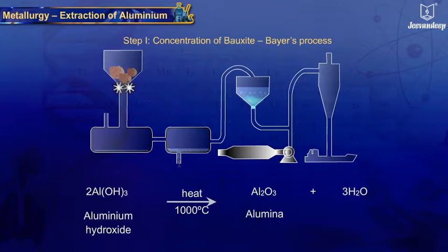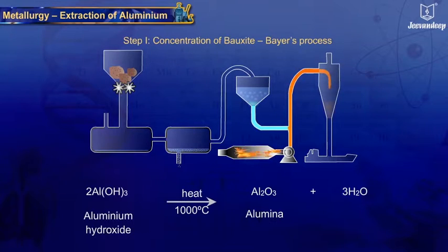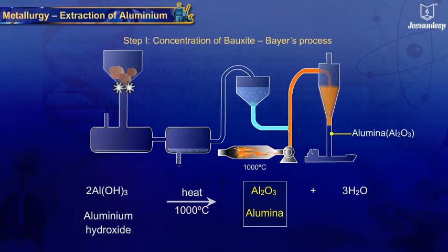This precipitate is filtered, washed, dried, and ignited at 1000°C to get alumina, that is Al2O3.